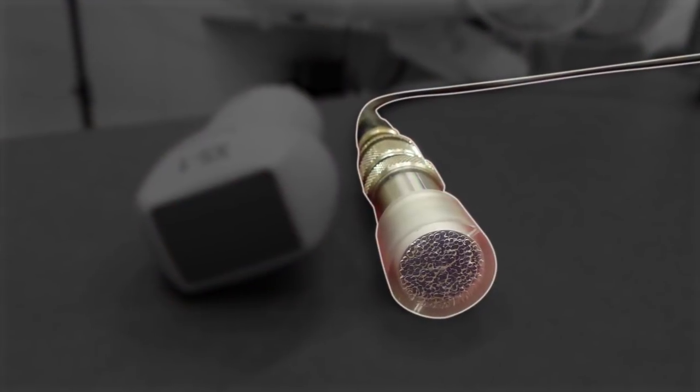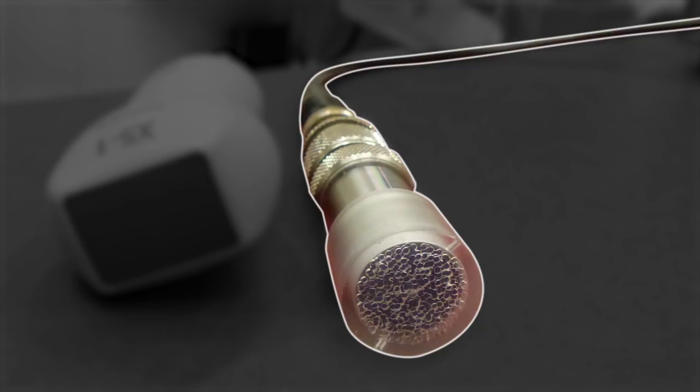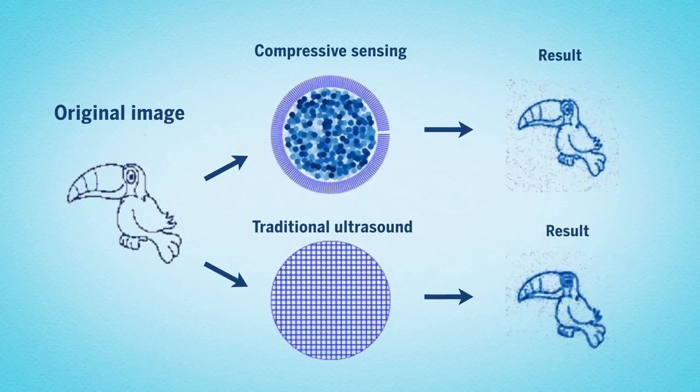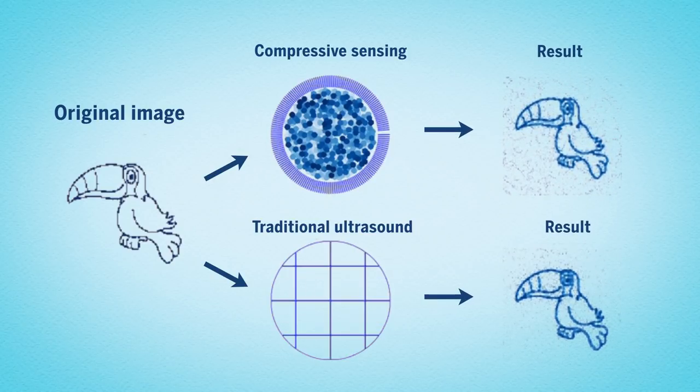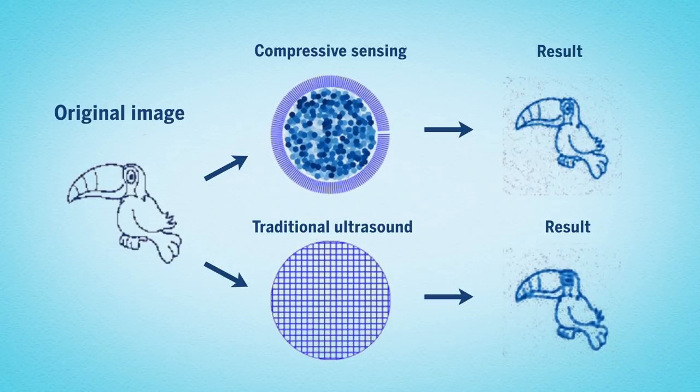Researchers have developed a new system that cuts this complexity down to just one sensor. In order to achieve this feat, they used a technique called compressive sensing. Compressive sensing involves using mathematics to extrapolate the information from one data source into many different points.